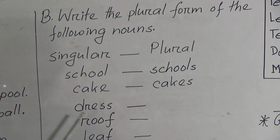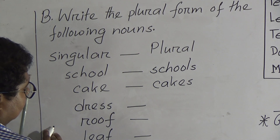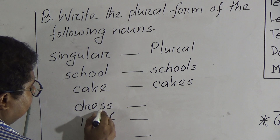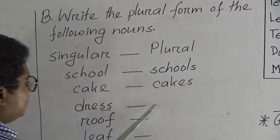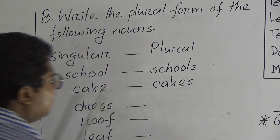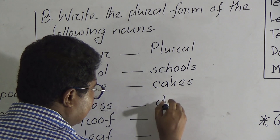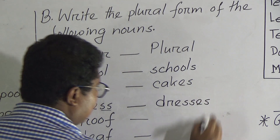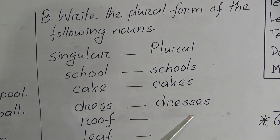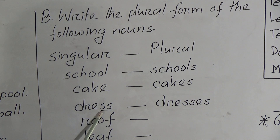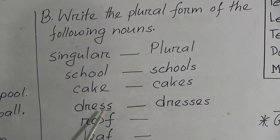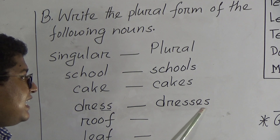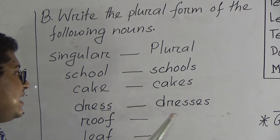'Dress' — D, R, E, double S. So if after a singular noun we find double S, we have to add E, S to make the plural form. So dress becomes 'dresses' — D, R, E, double S, E, S. As there is double S at the end of the word dress, we have to add ES after dress. So dress, dresses.